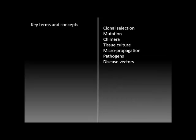Here are some key terms for this lesson. Clonal selection is picking out the plants that we want to propagate vegetatively. Mutations and chimeras, also known as mosaics, are an important type of propagule, especially for certain plants, notably tulips. Tissue culture and micropropagation are two examples of biotechnology applications that have come into important production in the last 20 to 30 years. We'll also talk about pathogens and disease vectors as respects tissue culture and micropropagation.